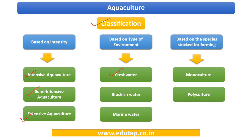When we say freshwater, the salinity — the presence of salt in the water — is zero. When we say brackish water, the presence of salt is less than 30 PPT (parts per thousand). If it is more than that, it is referred to as marine water, which is essentially seawater. Then, based on the species stocked for farming, it can be monoculture or polyculture. From the name itself, in monoculture only one type of species is reared, while in polyculture there is a mix of various species.